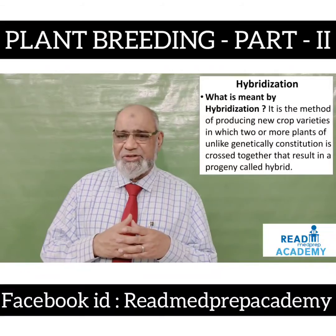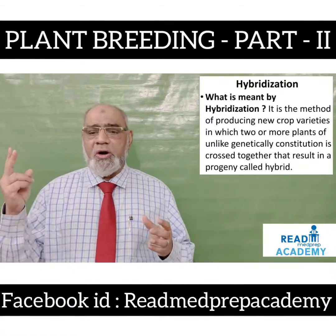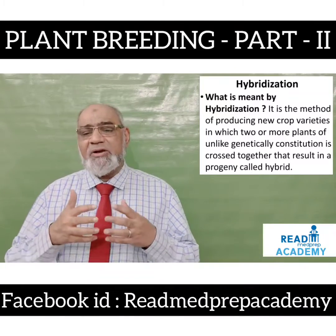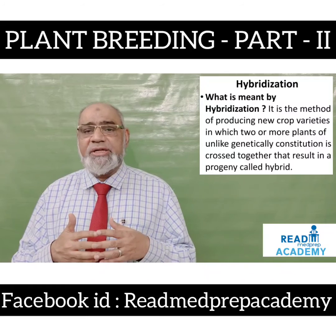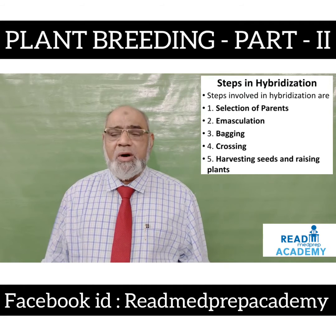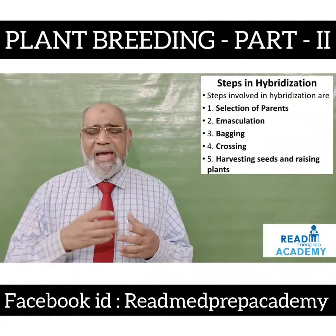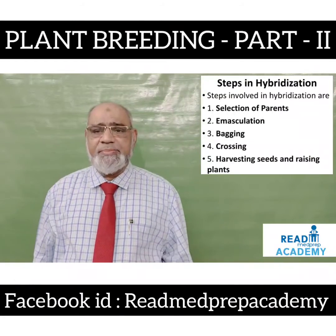What is hybridization? It is the method of producing new crop varieties in which two or more plants of unlike genetic constitution are crossed together, resulting in progeny called hybrids. Hybridization offers improvement in the crop and is the only effective means of combining desirable characters of two or more varieties or species. The first natural hybridization was observed by Cotton Mather in maize. The steps of hybridization are: selection of parents, emasculation, bagging, crossing, and harvesting seeds and raising plants.